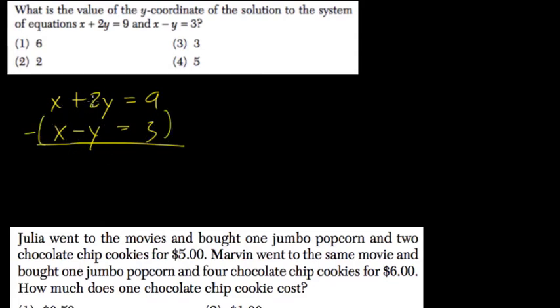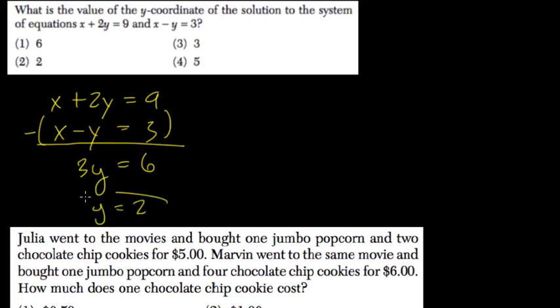x minus x is 0, 2y minus negative y is 3y, and 9 minus 3 is 6. Divide both sides by 3 and y equals 2. So they want to know what the y value is, and that's it — it's 2.